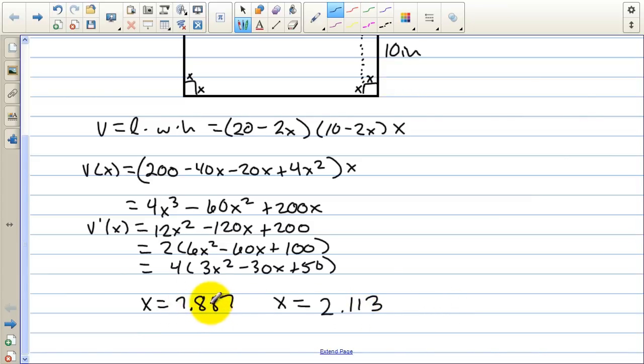Now, the x values can't be 7.887 because if you plug, well, let's just call it 7. If you plug 7 in for x, then we're going to have 10 minus 14. And we can't have a negative value for the side of a box. So this one works mathematically, but if we apply it to the story problem, it doesn't make any sense.